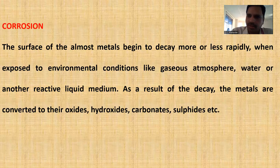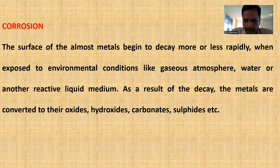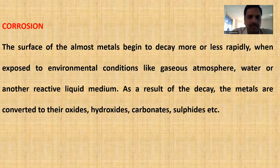We stop the process of corrosion by coating, by painting. The technique of avoiding corrosion will be different from metal to metal. If you want to protect iron from corrosion, we will paint the iron so that oxygen will not contact with it. If oxygen contacts with iron, there is a formation of metal oxide and it undergoes corrosion.